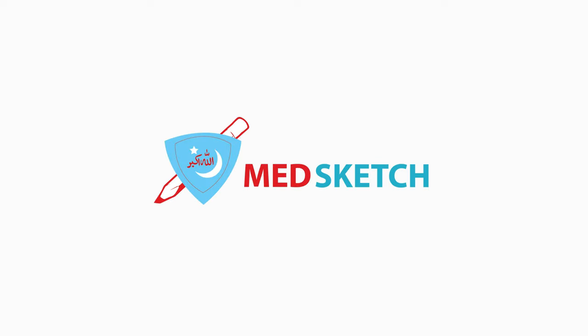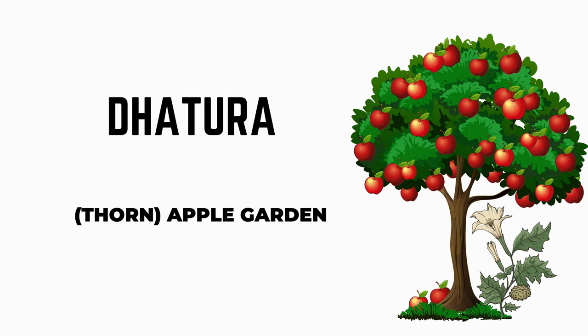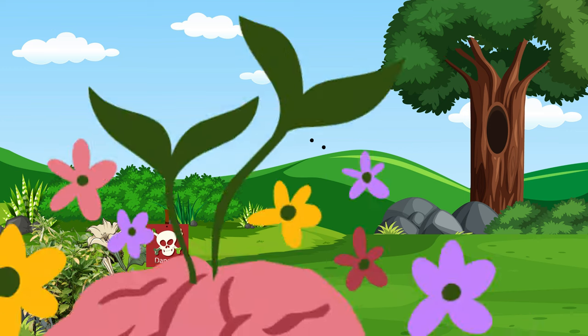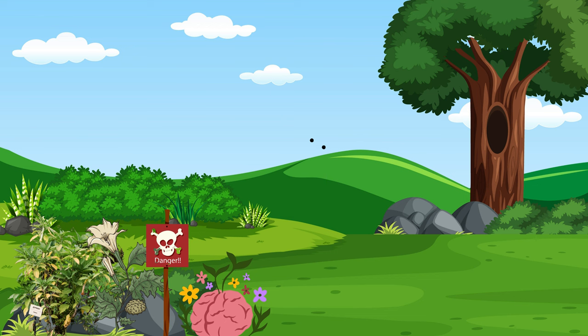Welcome to Med Sketch. The toxin of the day is Datura. For ease, we have named the scene as 'Apple Garden' because Datura is also known as thorn apple, mad apple, or jimsonweed. You can see a picture of the plant in the left bottom, just beside the danger sign — it has flowers and seeds. Datura belongs to the category of cerebral poisons, represented by a brain-like flower beside the danger sign.